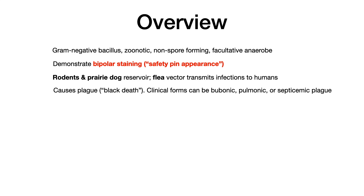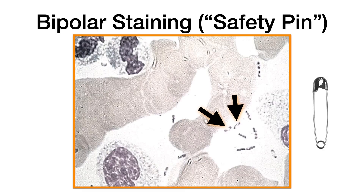This demonstrates something called bipolar staining. Sometimes this will be described as having a safety pin appearance. Bipolar staining means that on the two opposite ends, you see a cluster of staining at the ends with little teeny outbranching lines running between them. This is said to look like a safety pin.